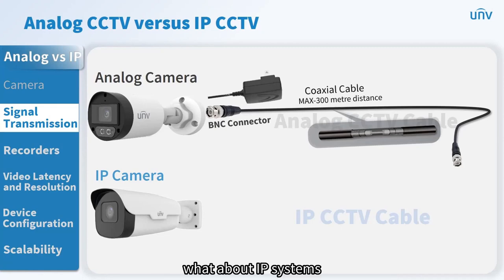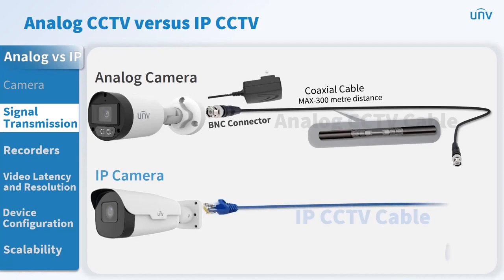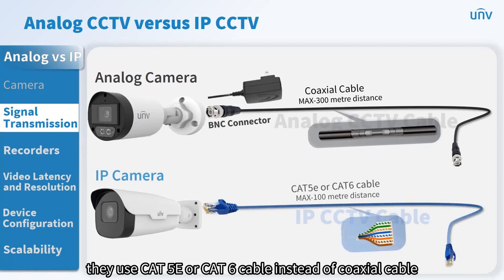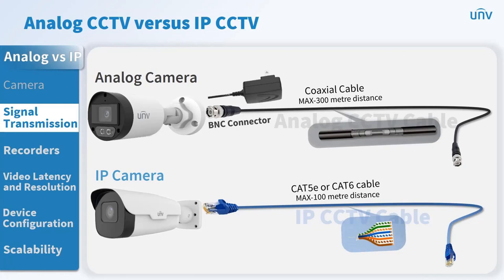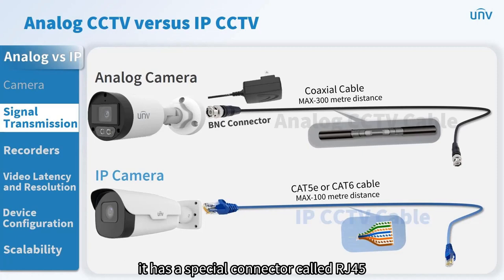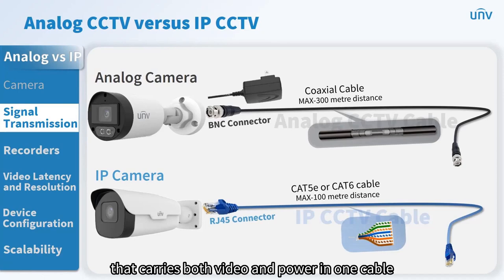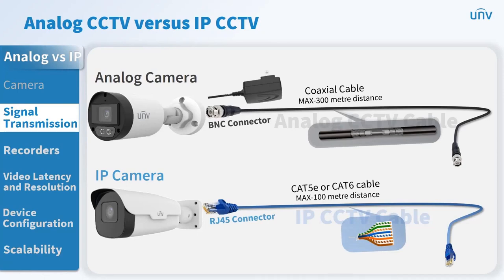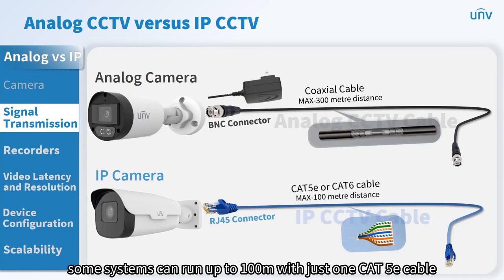IP systems use CAT 5E or CAT 6 cable instead of coaxial cable. This is a type of UTP cable that has four pairs of wires twisted together without any metal shield around them. It has a special connector called RJ45 that carries both video and power in one cable. Some systems can run up to 100 meters with just one CAT 5E cable.